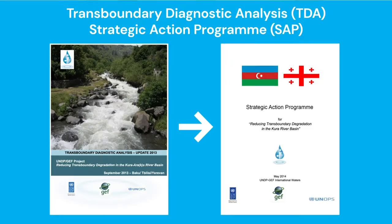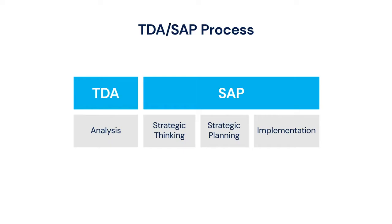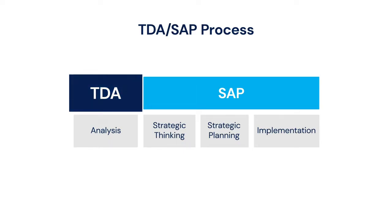The TDA SAP process often takes several years. For the TDA, first you bring the countries together and you really work with their experts and international experts providing some guidance on identifying what are the major priority issues and concerns that are transboundary in nature, and figuring out what evidence we have from all of the stakeholders and all of the countries that show what those priority issues are and how those issues need to be addressed.